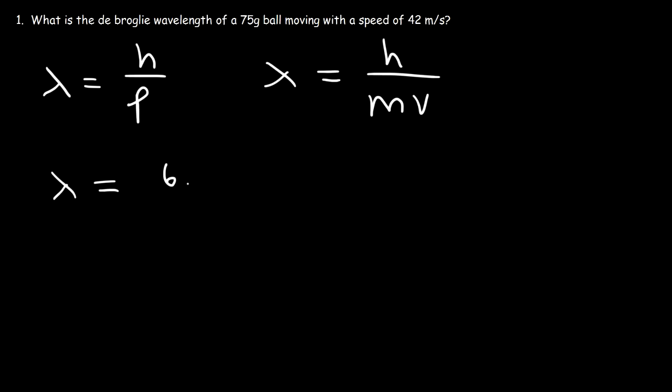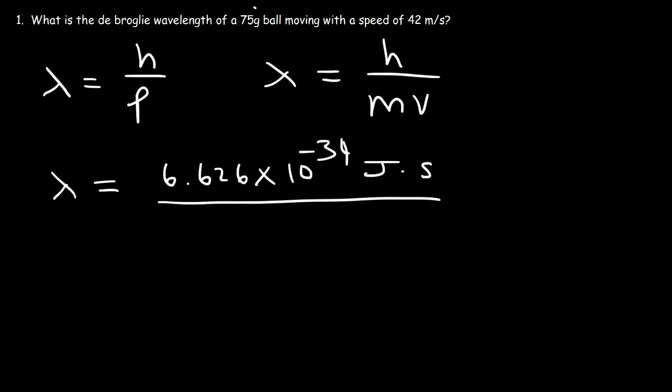So let's calculate the wavelength. It's going to be Planck's constant, which is 6.626 times 10 to the minus 34 joules times seconds. The mass of the ball needs to be in kilograms, so to convert grams to kilograms we divide by a thousand — 75 grams is 0.075 kilograms — and the speed of the ball is 42 meters per second.